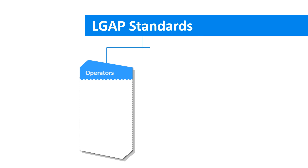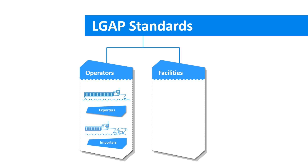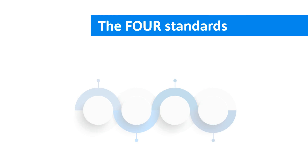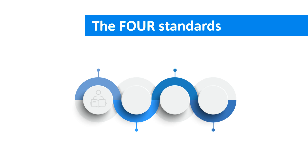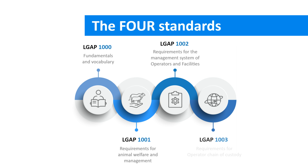The LGAP standards list requirements for operators and for facilities. Requirements for operators apply to exporters and importers. The requirements for facilities apply to feedlots, farms and abattoirs. The standards are made up of four key parts. The Fundamentals and Vocabulary standard outlines the LGAP principles, while the remaining three standards then list the requirements that must be met by operators and facilities.